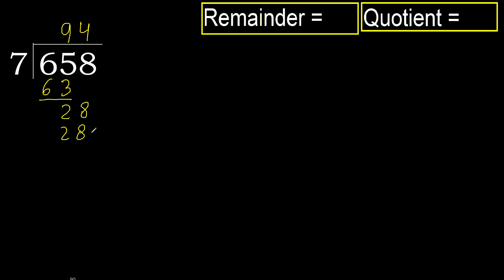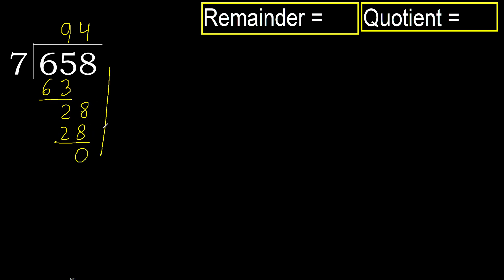28 is not greater, ok. Subtract: 28 minus 28 is 0. There is no next number, therefore finish.